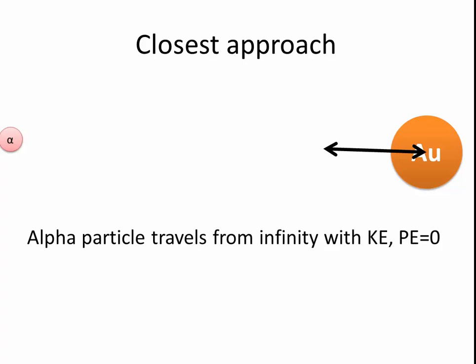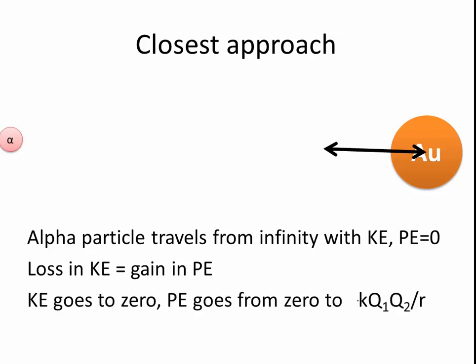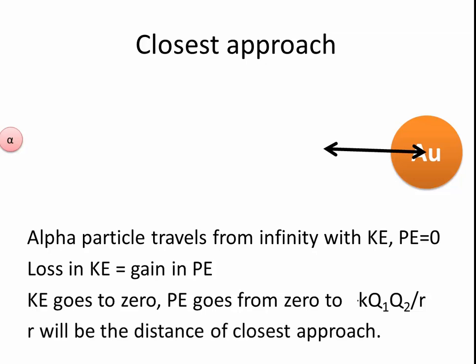So the way we do this, the alpha particle travels from infinity with kinetic energy and the potential energy at infinity is zero. The kinetic energy it loses goes down to zero as it gets to its closest point, equal to the gain in potential energy. So the kinetic energy goes to zero and the potential energy goes from zero up to kqq over R, and R will be the distance of closest approach. You basically need to equate those two values.